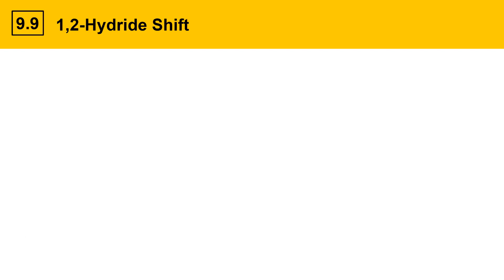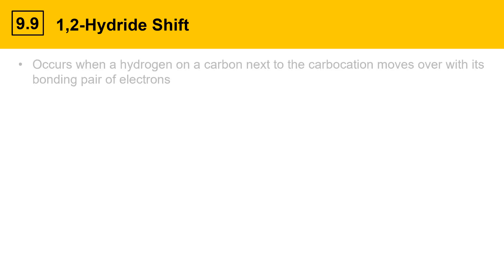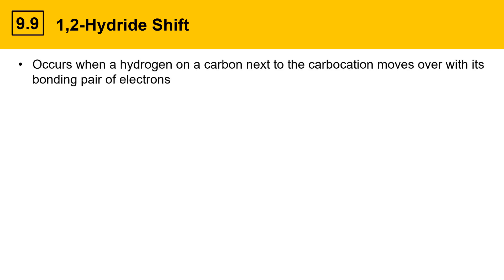One type of reaction that can happen with carbocations is something called a 1,2-hydride shift. This is a reaction that occurs when a hydrogen on a carbon next to the carbocation moves over with its bonding pair of electrons. This must make the carbocation more stable if the reaction is going to happen.